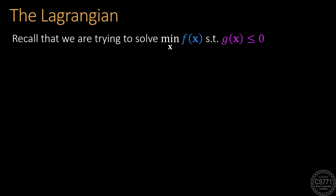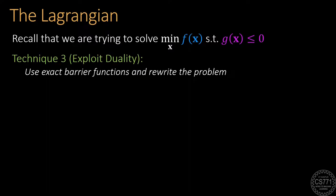We will use our running example of minimizing an objective function f subject to the constraint g of x less than or equal to 0. The new technique we will study today is based on the simple idea that if we use exact barrier functions, as opposed to approximate barrier functions that we used last time, then they will not distort the objective and they should also be able to handle equality constraints.